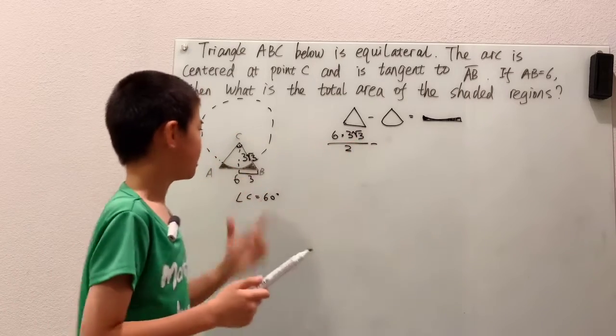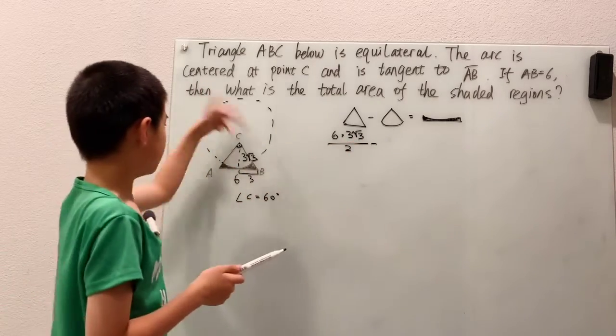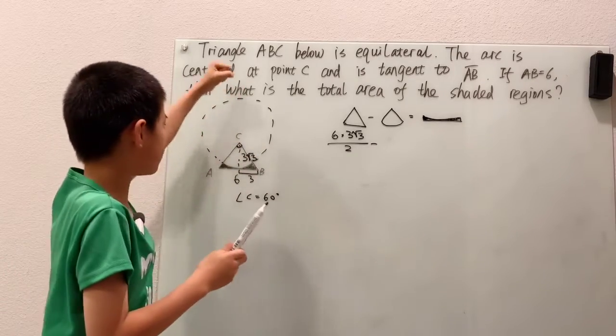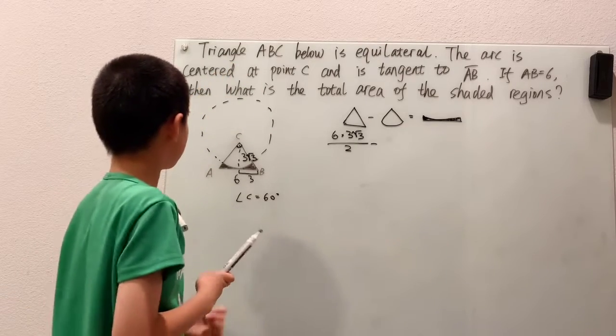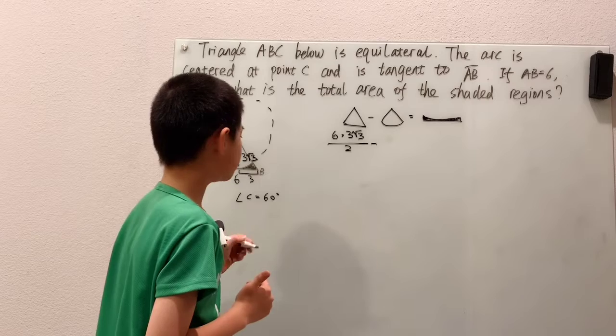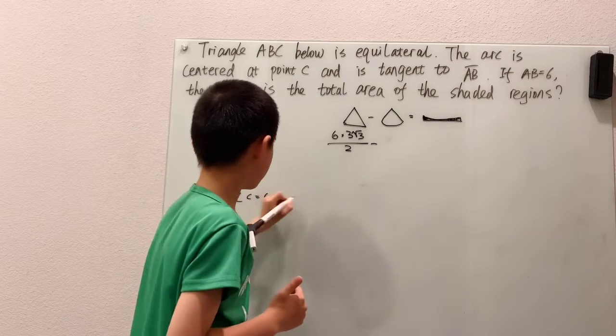because now what we see is our height of the triangle, that we've just figured out here, well, that's the radius of the circle, right? Because C is the center, and C is where we're taking that length, that, our height, and extending that down to the bottom of the triangle, which means that we can take,